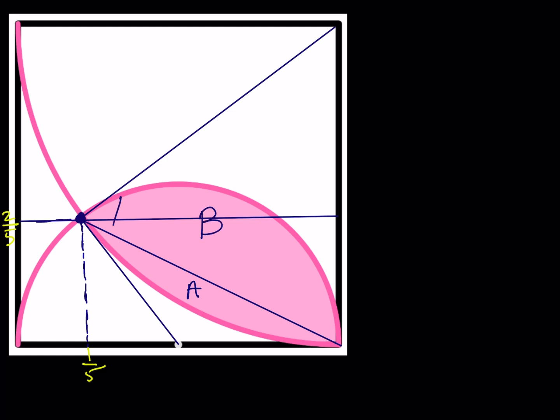I'm going to name the two bumpy regions. The smaller one I'll call A, and the larger one I'll call B. We want to find A + B, because that's the shaded area.